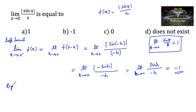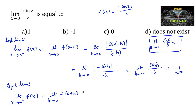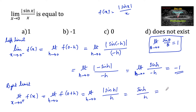Now let us find the right limit: limit x tends to 0 plus of f of x. We write this as limit h tends to 0 of f of 0 plus h, which is limit h tends to 0 of sin of h upon h. Using the property limit theta tends to 0 of sin theta by theta is 1, the right limit equals 1.